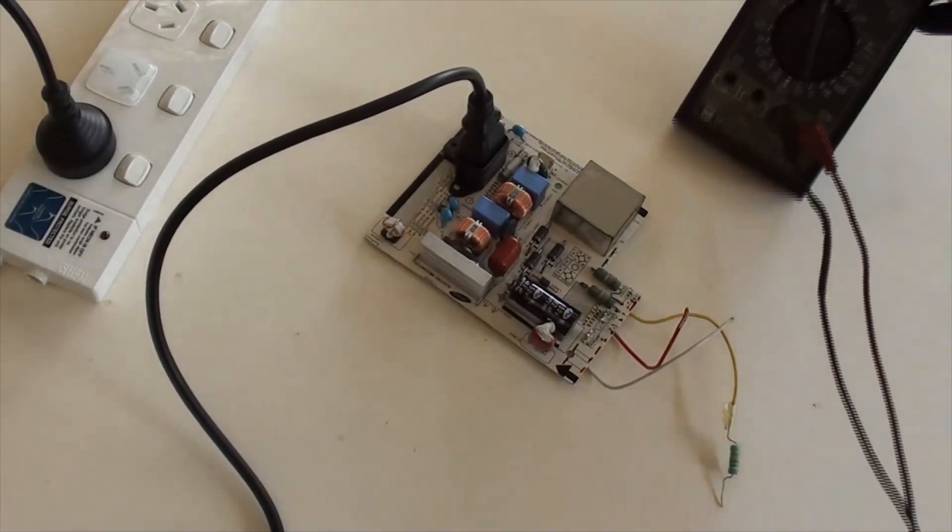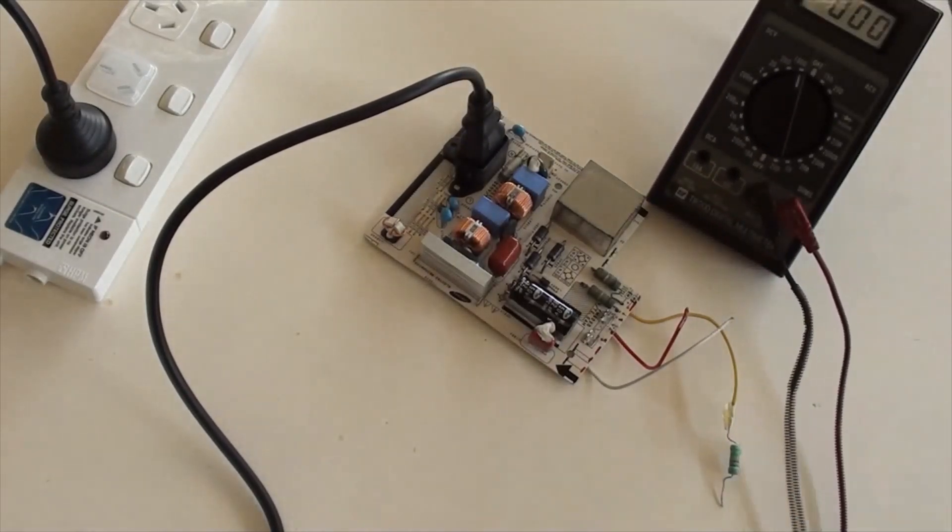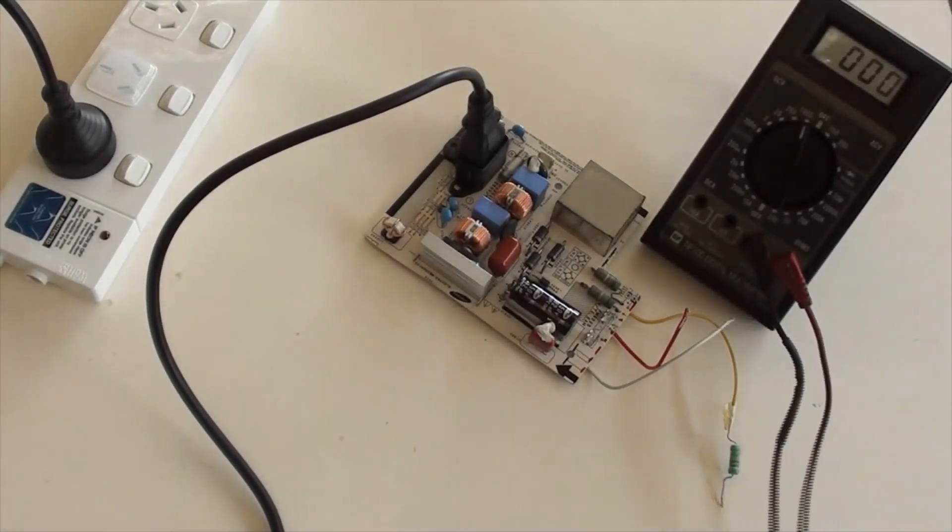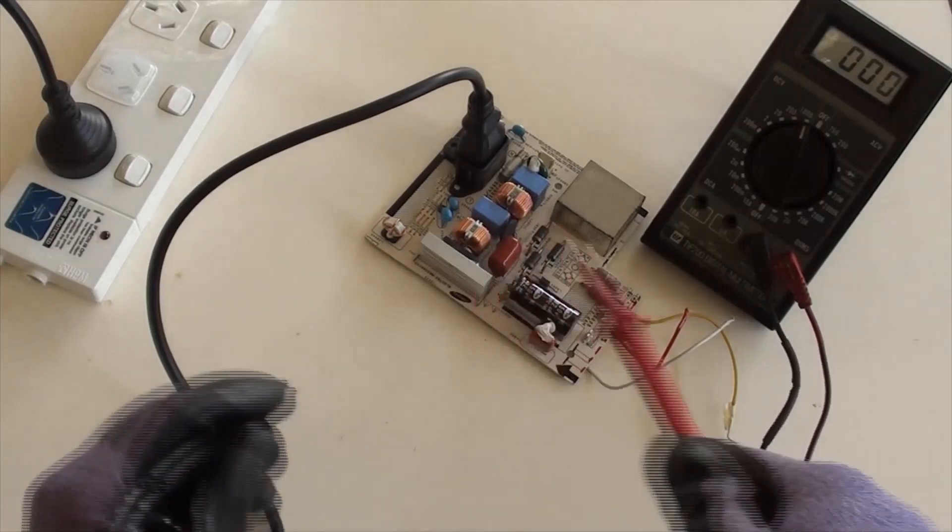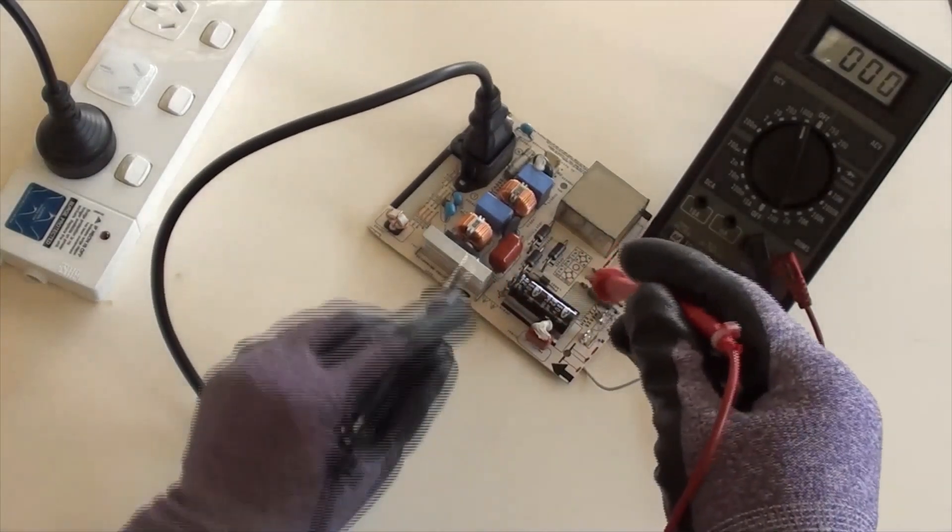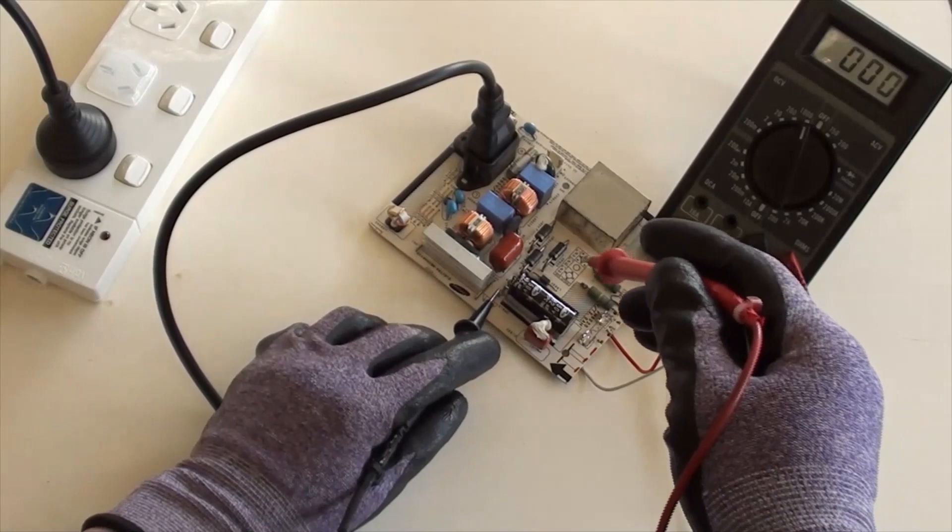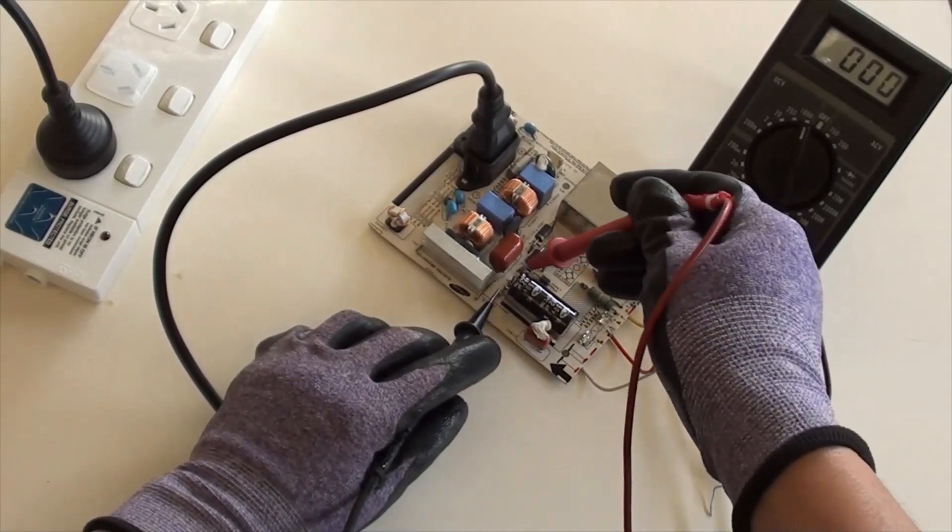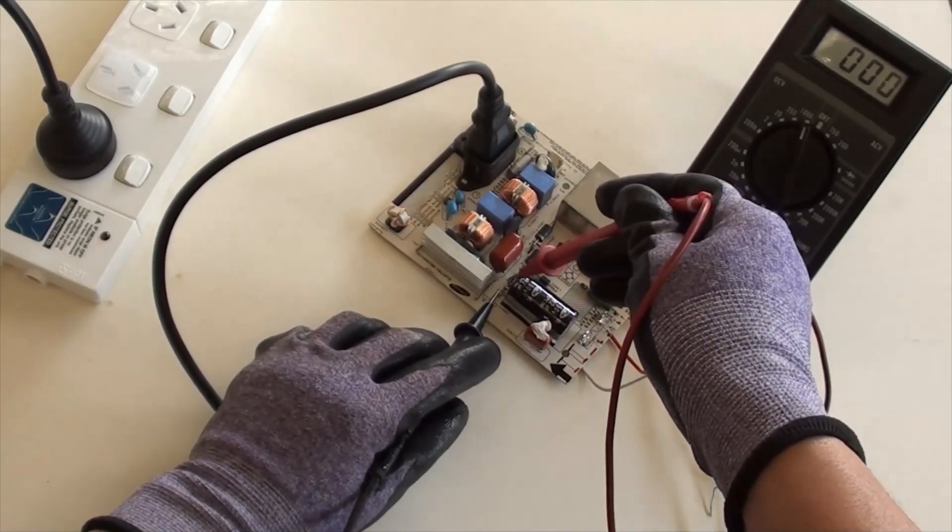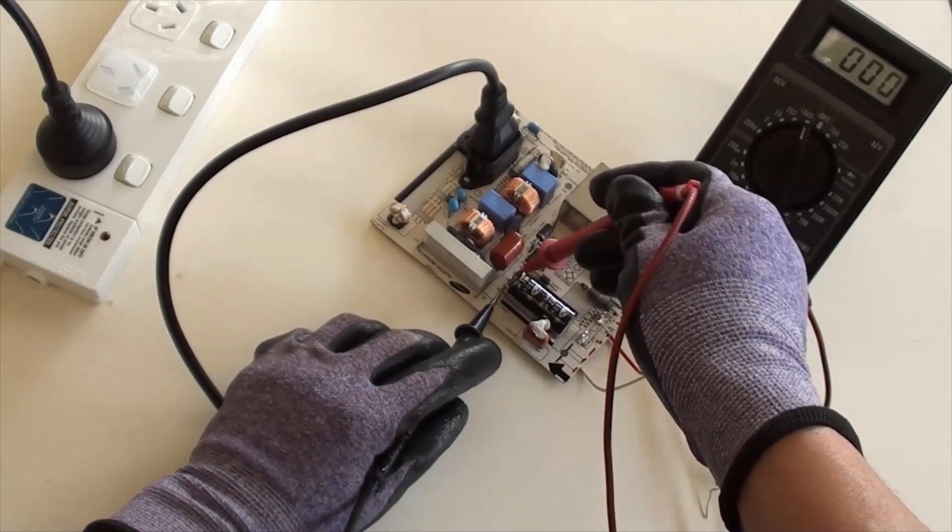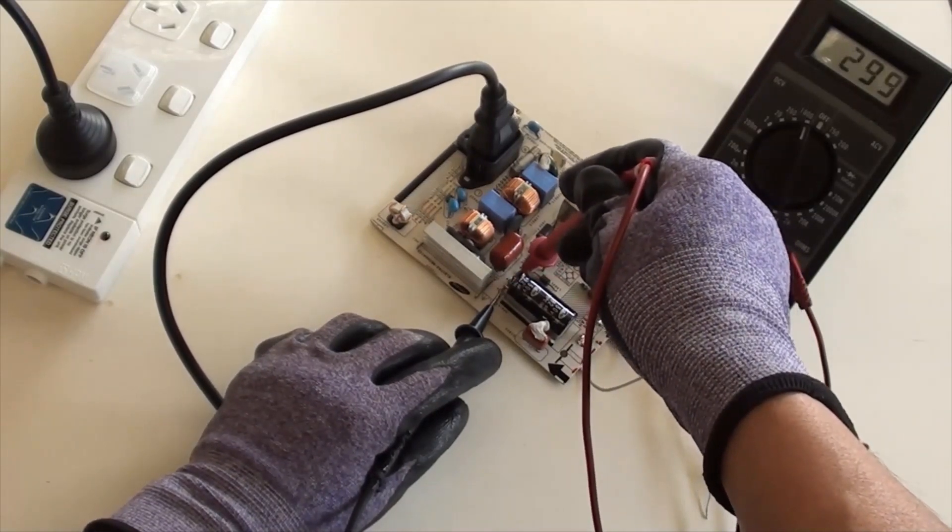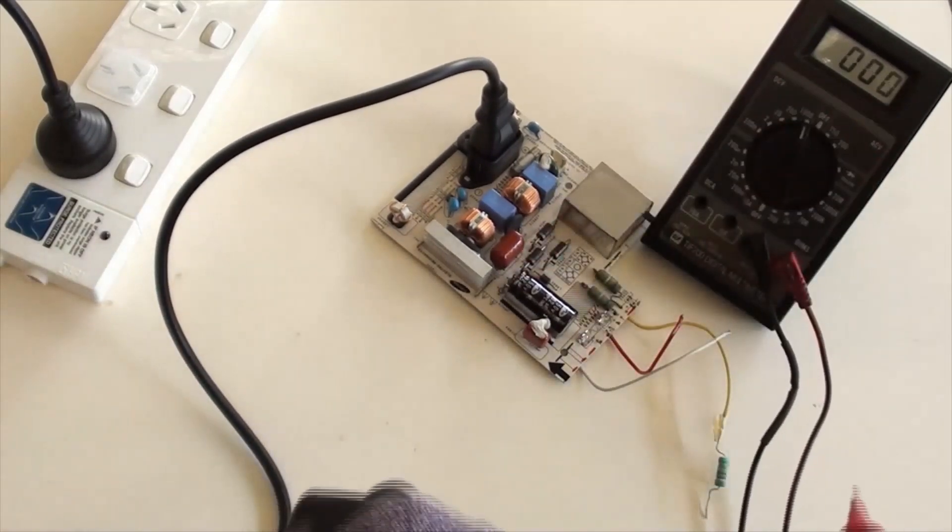Now using a multimeter's DC function to measure the capacitor's voltage between its terminals. 300 volts can be seen from the meter after the power was off.